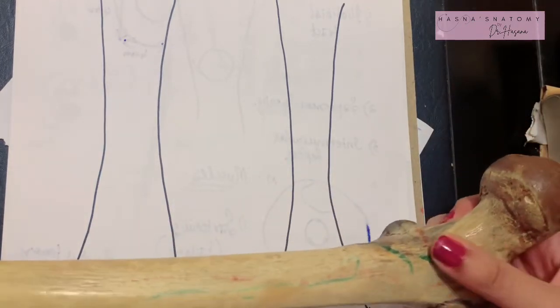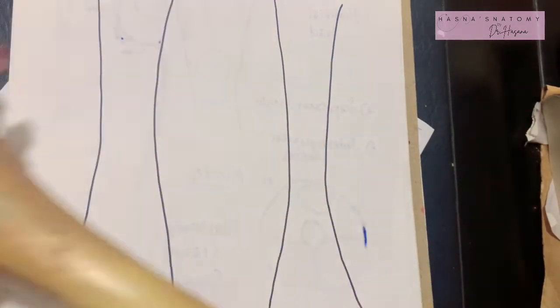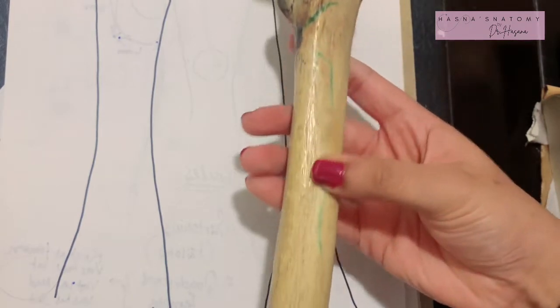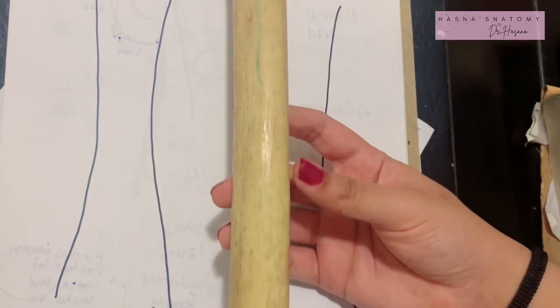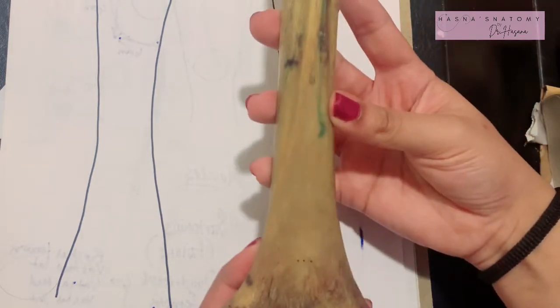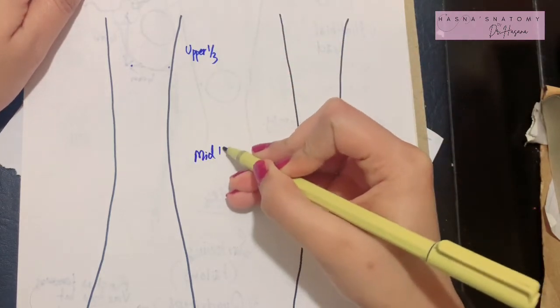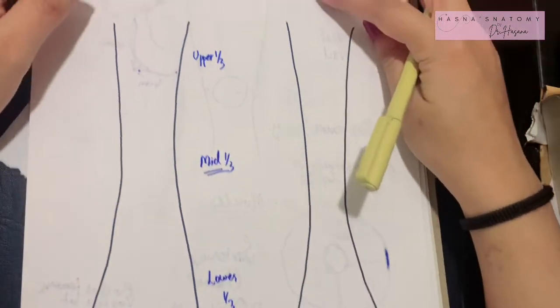Always remember, anteriorly is going to be the intertrochanteric line and posteriorly will be this prominent ridge. The shaft is going to be convex forwards. The most important point in the shaft's bony features is that the middle part of the shaft is the most narrow part. The shaft of the femur is divided into an upper one-third, a middle one-third which is the narrowest, and the lower one-third.